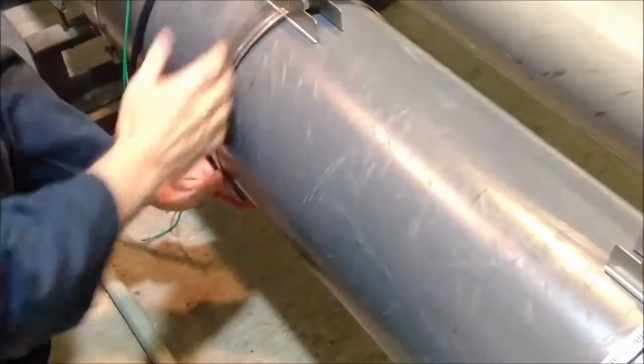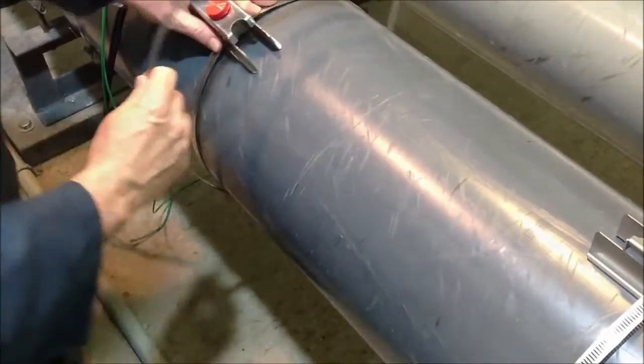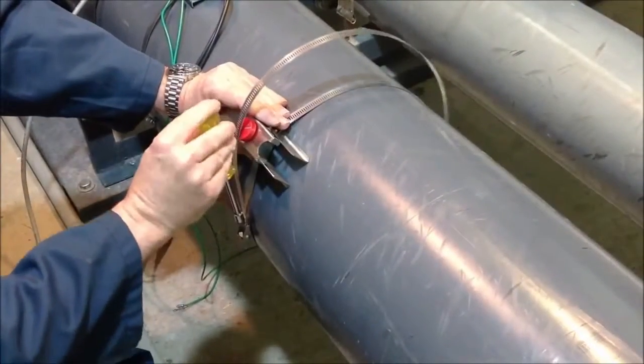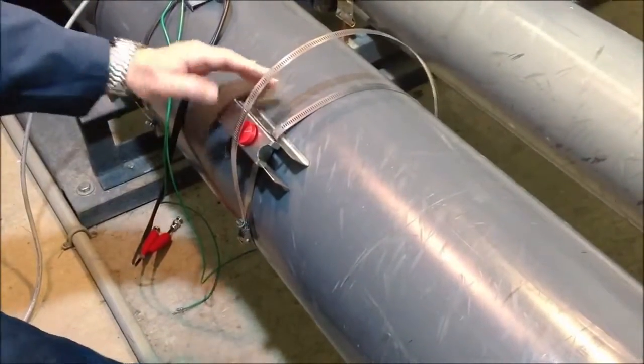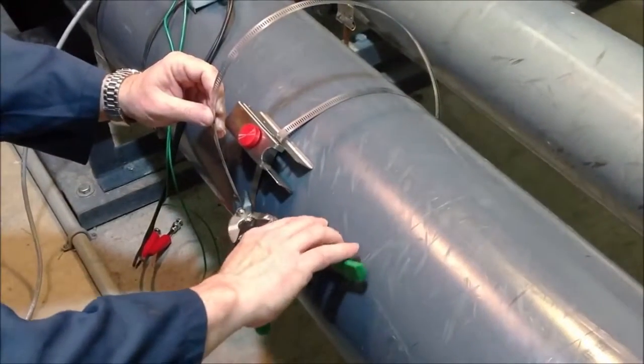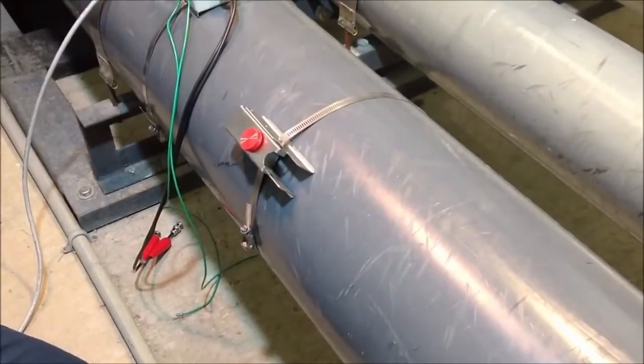The clamp is mounted on the pipe and secured in place by tightening the adjustment screw. Any excess length can be trimmed and discarded.